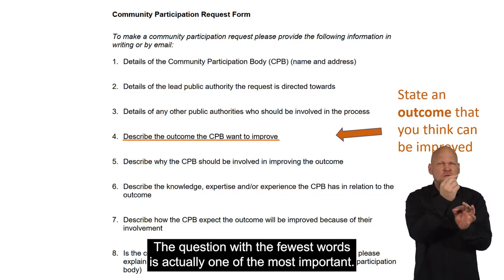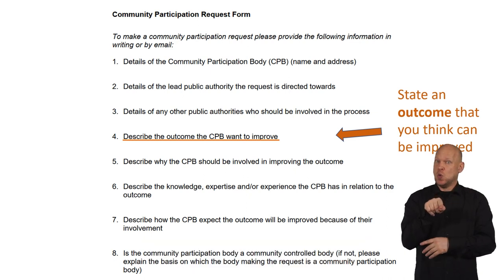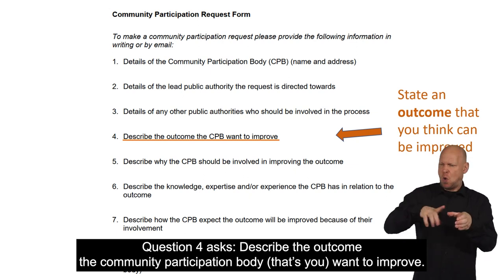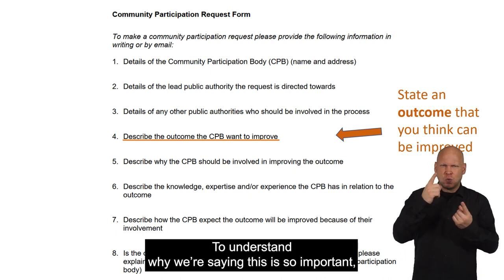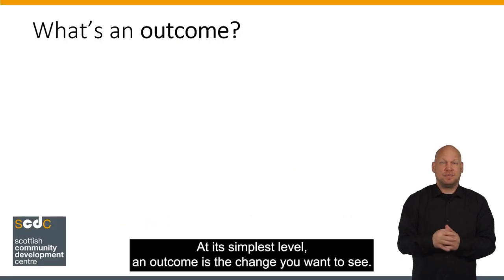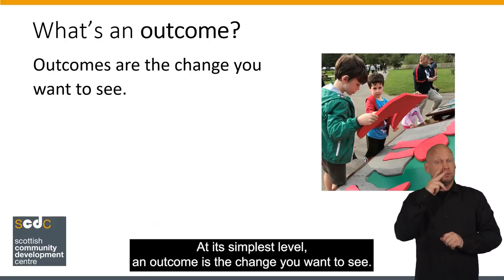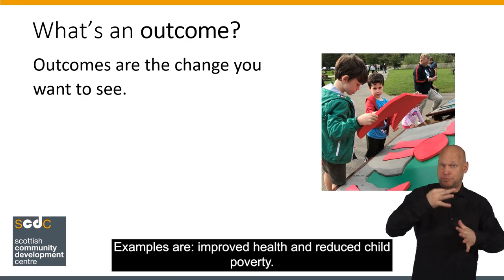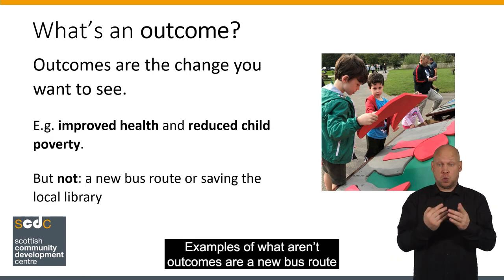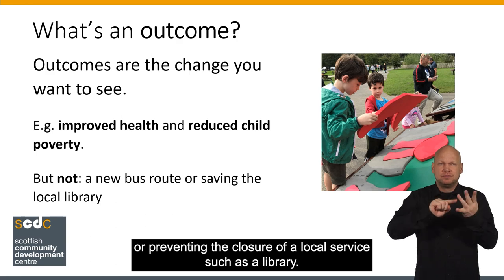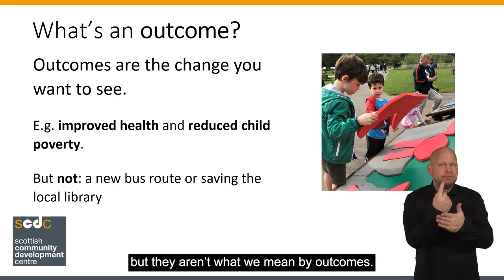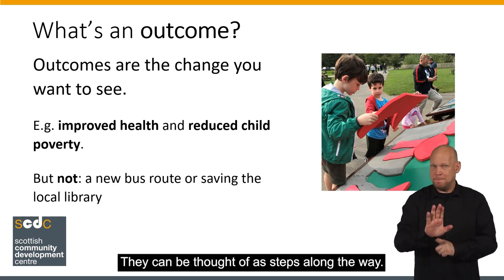The question with the fewest words is actually one of the most important. Question four asks: describe the outcome the community participation body — that's you — want to improve. To understand why this is so important, let's look at what an outcome is. At its simplest level, an outcome is the change you want to see. Examples are improved health and reduced child poverty. Examples of what aren't outcomes are a new bus route or preventing the closure of a local service such as a library. Of course, these may be things you want to see happen, but they aren't what we mean by outcomes — they can be thought of as steps along the way.